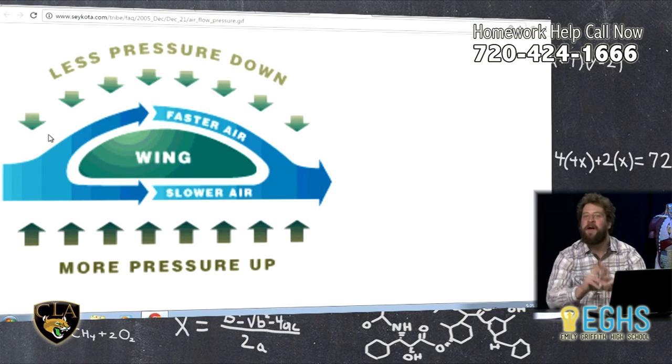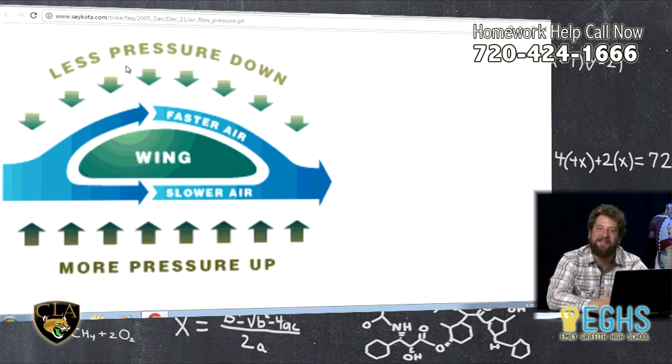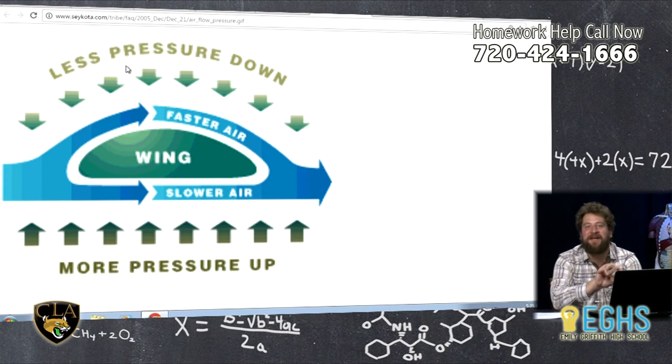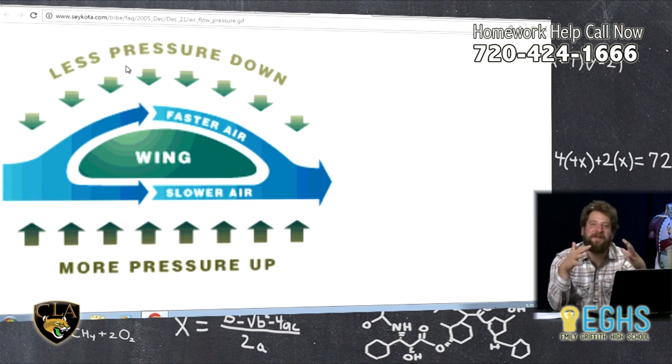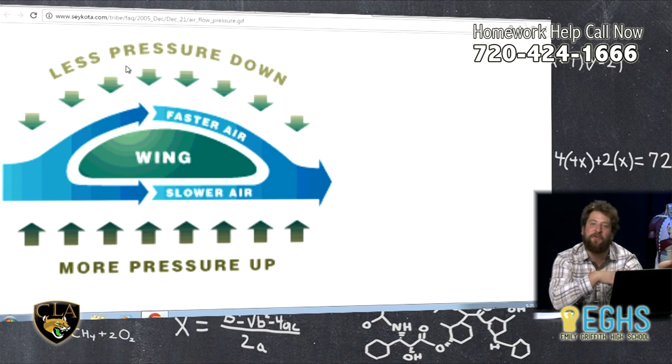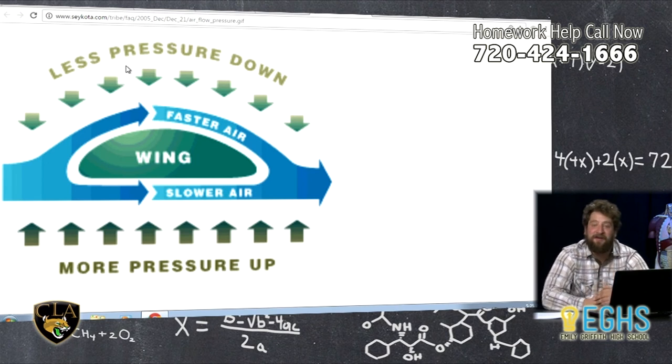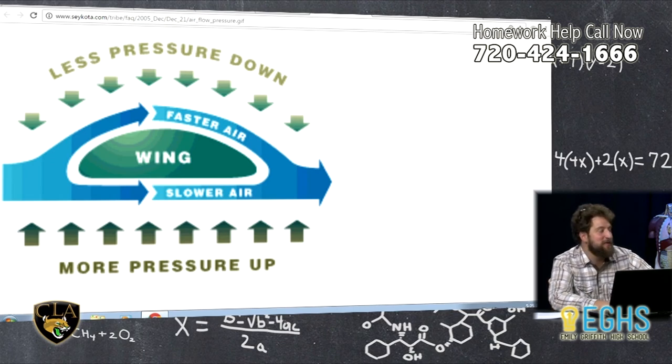But people see propellers on airplanes, or you see the gigantic jet engines on the sides of the wings. And I think people often have misconceptions about how flight actually works. But it really is just the speed of the vehicle creating airflow over the wings, creating this lift on the airfoils.